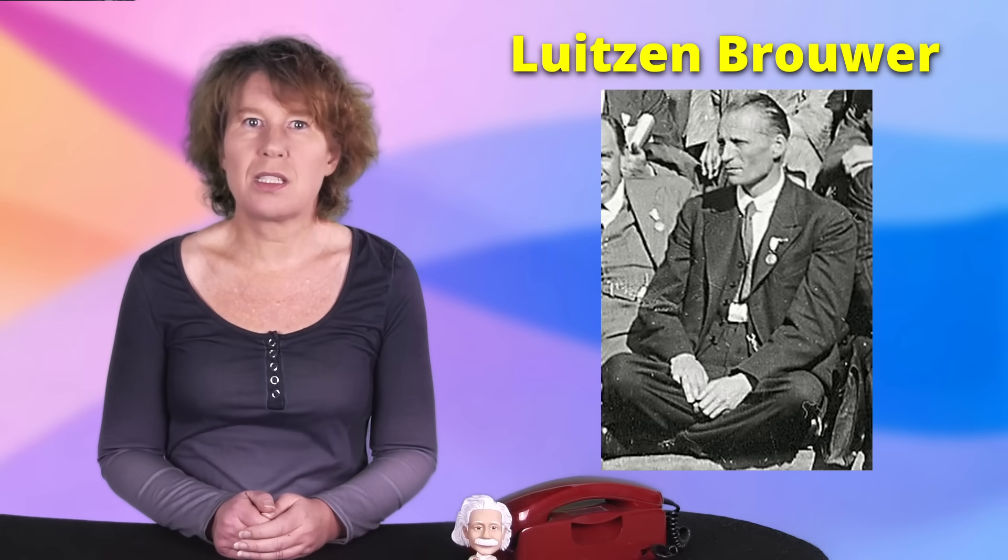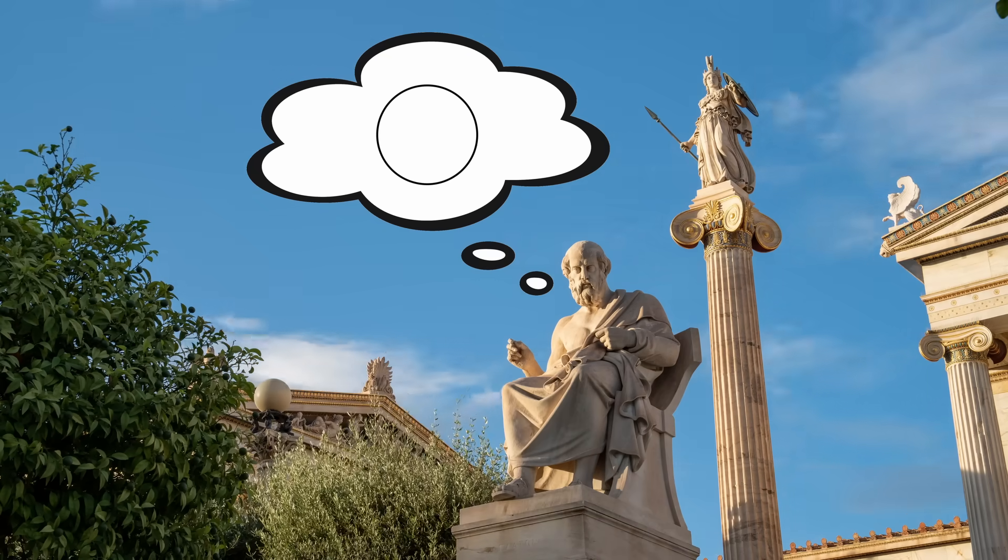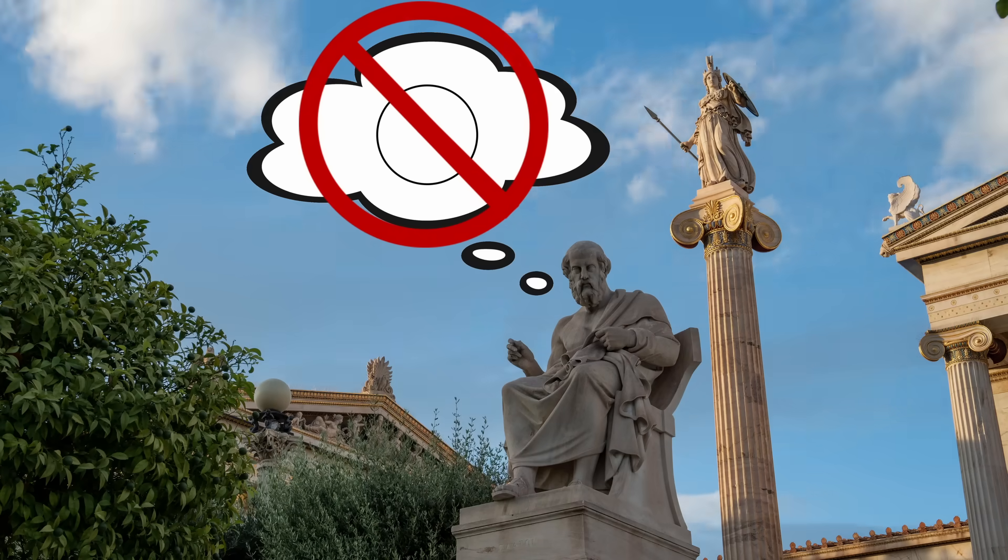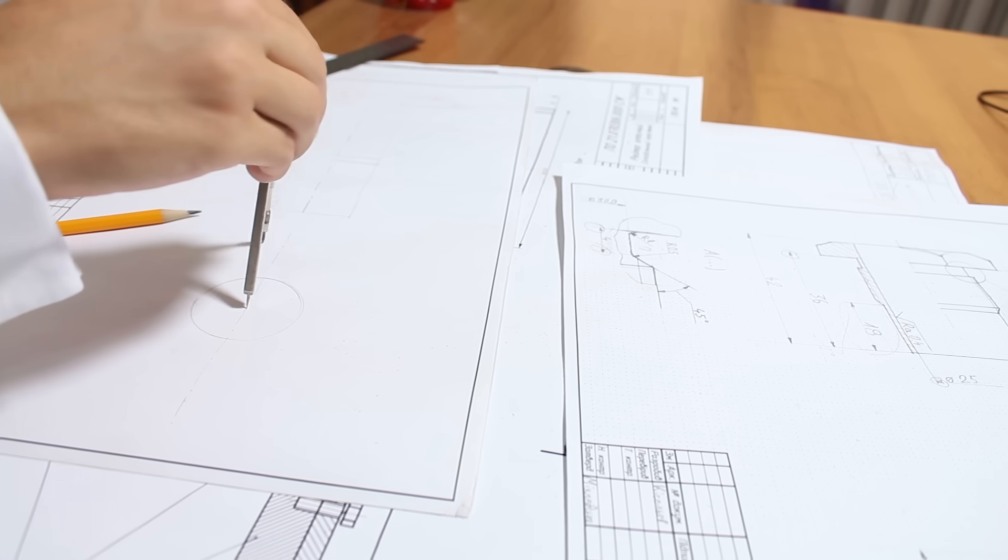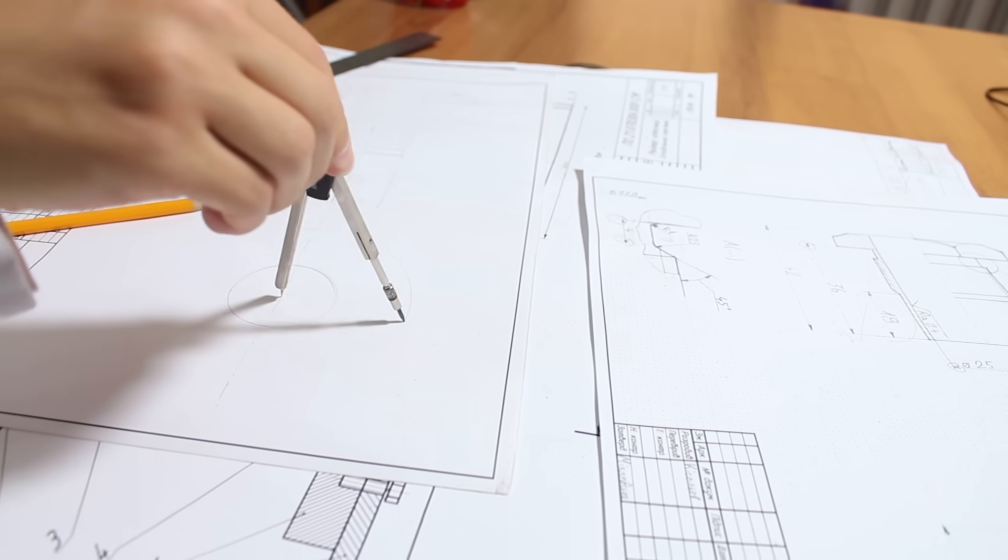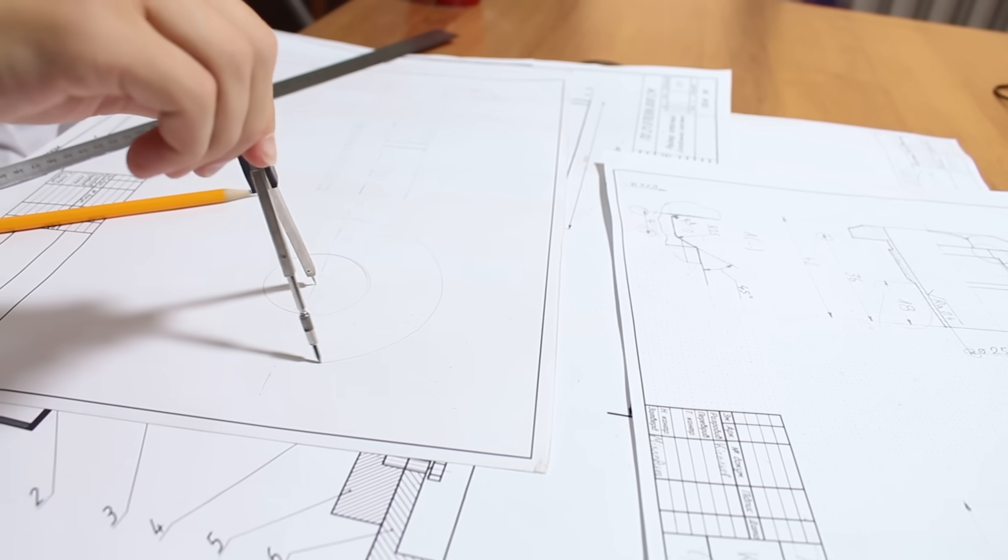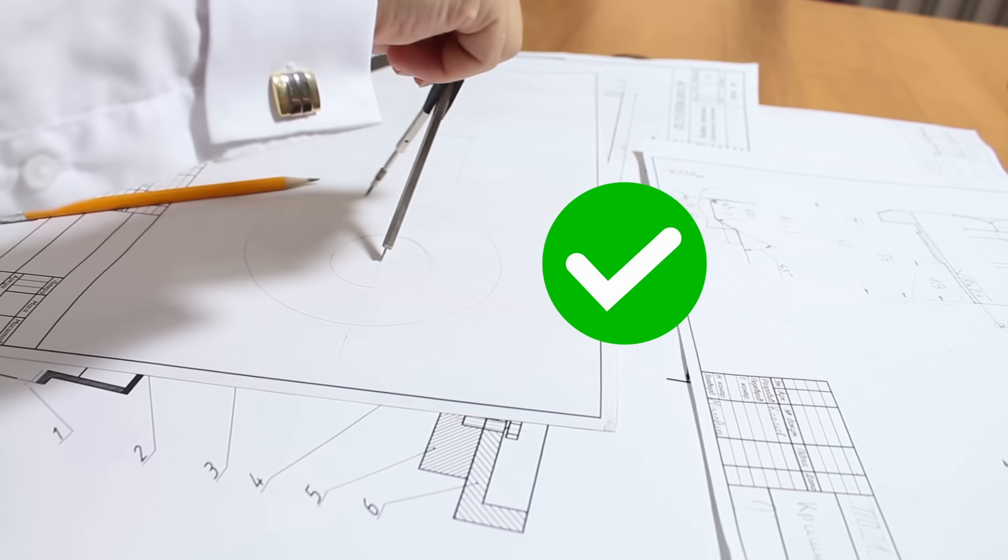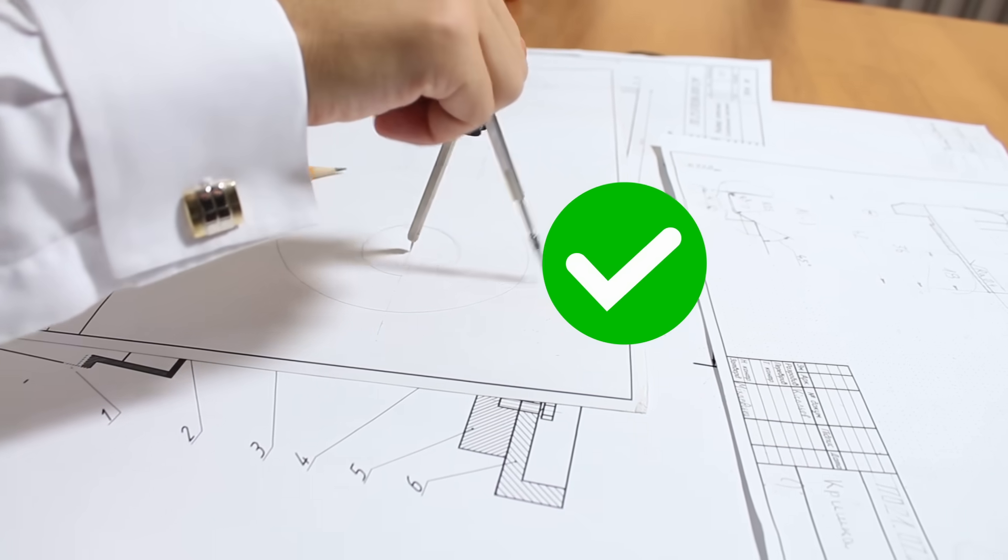Gisin thinks that we should not use mathematics that we can't construct ourselves. This is an idea that goes back to the Dutch mathematician Luitzen Brouwer in the early 20th century. He said that we shouldn't treat mathematics as an abstract, eternal truth existing independently of human thought. Instead, mathematics is dynamic, evolving and rooted in human intuition.